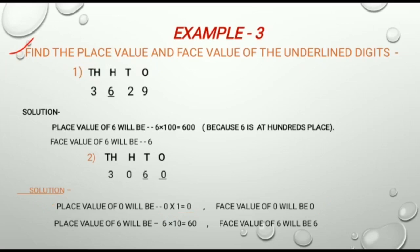Now we come to the place value of 6. So the place value of 6 will be 6 multiplied by 10 is equal to 60. And the face value of 6 will be 6. As we know, the face value never changes according to the places.